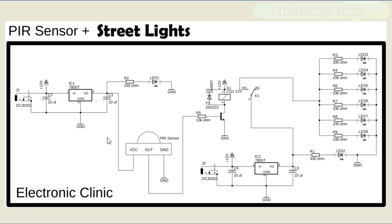Make sure you also connect the ground of the voltage regulator with the ground of the PIR sensor module. The output pin of the PIR sensor is connected with the base of the 2N2222 NPN transistor through a 10K resistor. The emitter of the 2N2222 NPN transistor is connected with the ground, while the collector side is connected with one side of the relay coil, and the relay coil's other side is connected with 12 volts. This second 5 volt regulated power supply is used to power up the white color LEDs through the relay. 330 ohm resistors are connected with the anode sides of all the LEDs, while the cathode sides are connected with the ground.